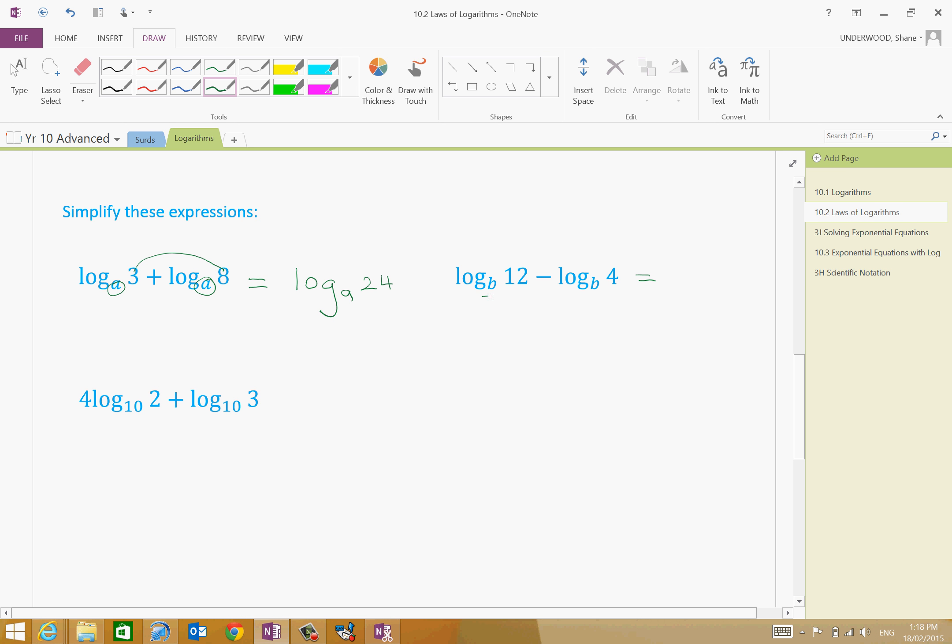Over here, we've got the same base of B. When I'm subtracting two logs of the same base, log to the base B simplified 12 over 4, which simplifies to log to the base B of 3.